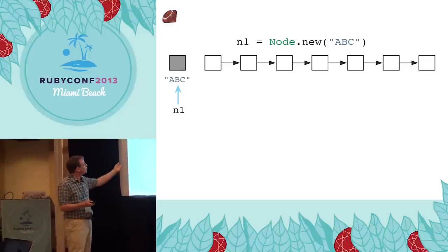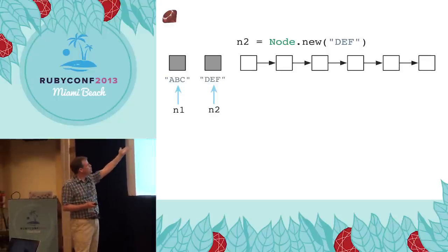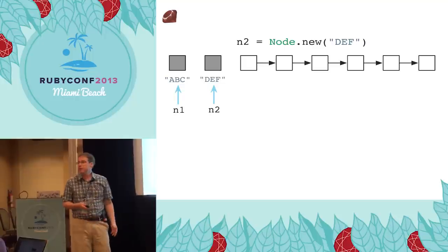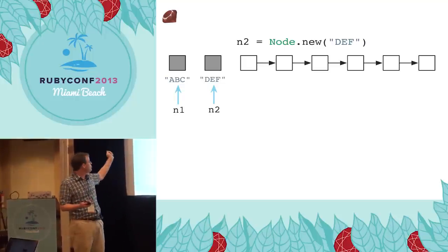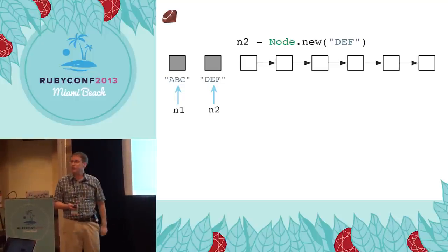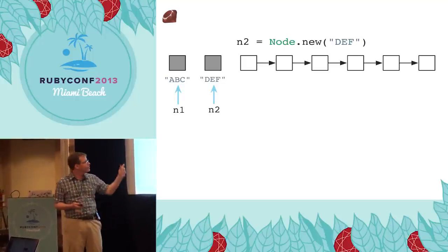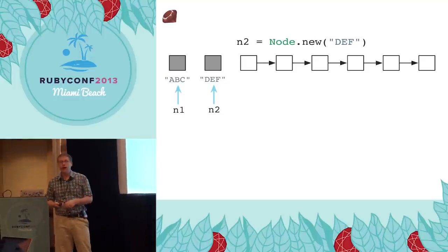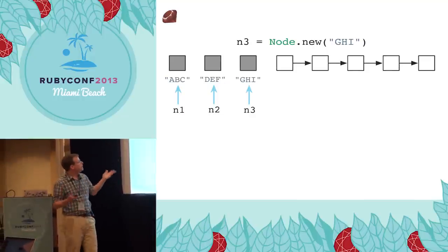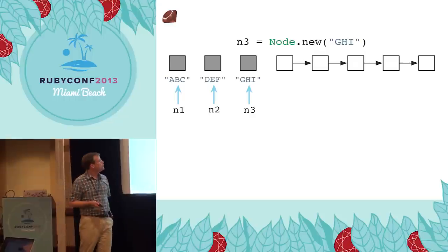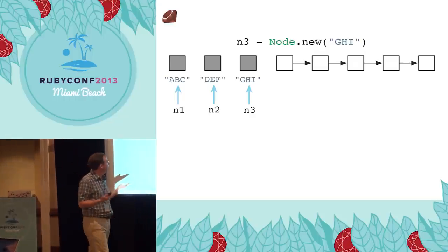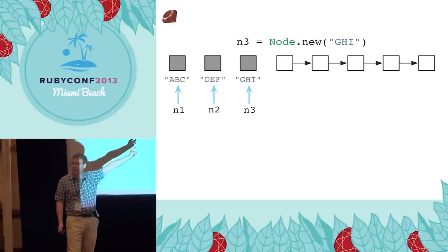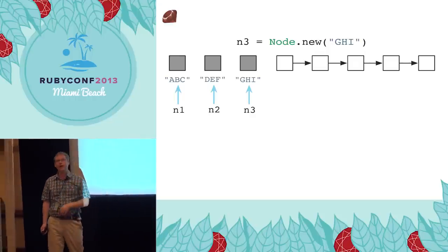If I create another one — n2 = Node.new('DEF') — same thing. Ruby does very little, just gives me another one off the head of the list. The list gets a little shorter and I have two objects. This algorithm is called the free list.